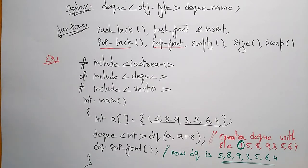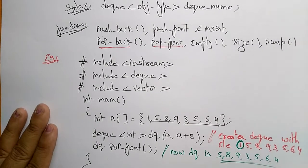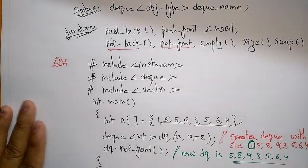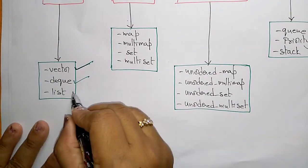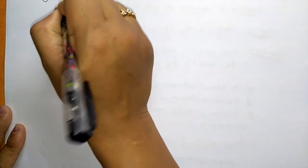This is the deque example — elements can be deleted at the back or at the front. Now the next sequence container example is the list. The Standard Template Library contains four container types: sequence containers, associative containers, unordered associative containers, and adapters. I've covered vector and deque; the third one is the list.